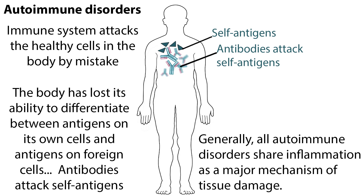Immunosuppressant drugs are also given for autoimmune disorders to decrease the undesirable immune response of the body. Autoimmune disorders occur when a person's immune system attacks the healthy cells in the body by mistake. The body has lost its ability to differentiate between antigens on its own cells and antigens on foreign cells. Generally, all autoimmune disorders share inflammation as a major mechanism of tissue damage. There are many autoimmune diseases; we'll take a look at a few common ones.